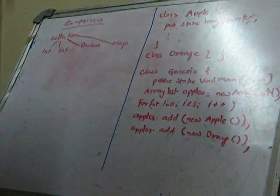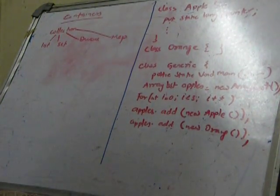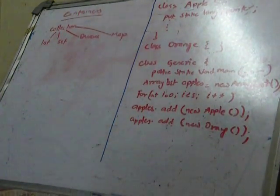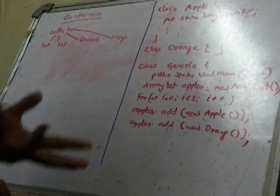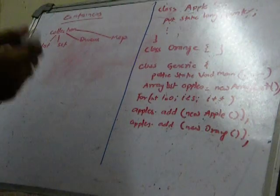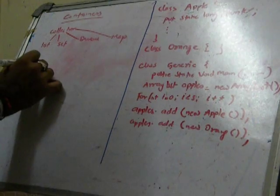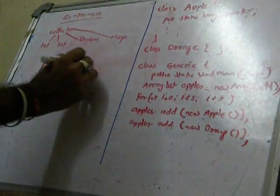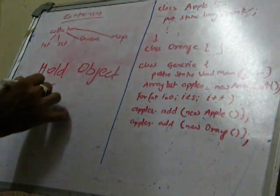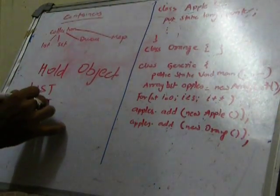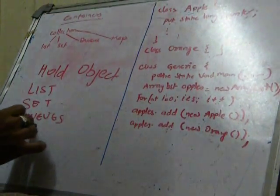Everything is done with objects. In Java to hold any object we need something, just like if we want to hold something we need some kind of utensil or something. Similarly in Java we have containers and the containers are basically intended to hold an object. There are basically four types of containers we call list, set, queues and map.